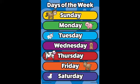How many days are there in a week? There are 7 days in a week. They are Sunday, Monday, Tuesday, Wednesday, Thursday, Friday and Saturday. I repeat once again.